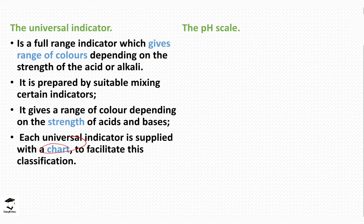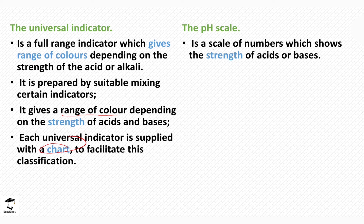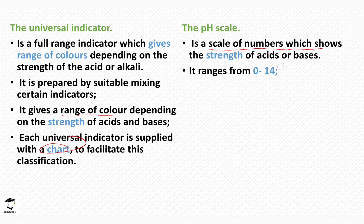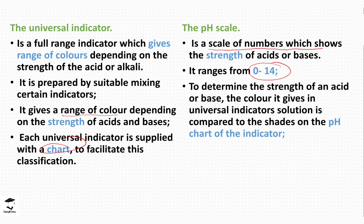The universal indicator is a solution, and the bottle usually comes with a pH chart. This pH chart has a range of colors used to check whether an acid or base is strong or weak. Those colors are placed side by side with a pH scale — a scale of numbers that tells us if an acid or base is strong or weak. It ranges from 0 to 14, with 0 on the left and 14 on the right.